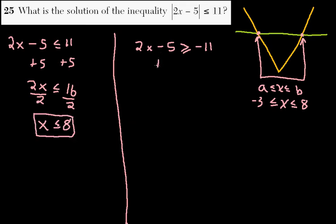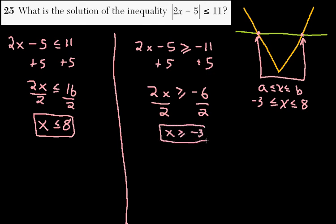Over here, we add 5 to both sides. We have 2x greater than or equal to negative 6. We divide by 2, we divide by 2, and we get x greater than or equal to negative 3, which is the second part.